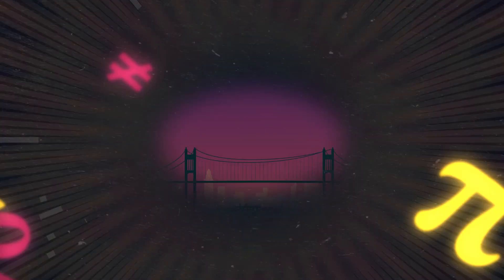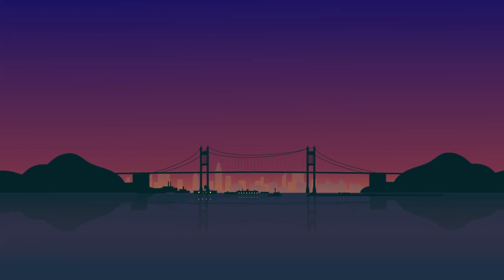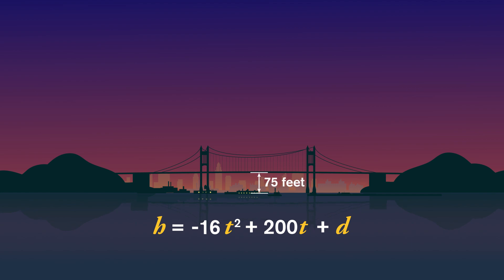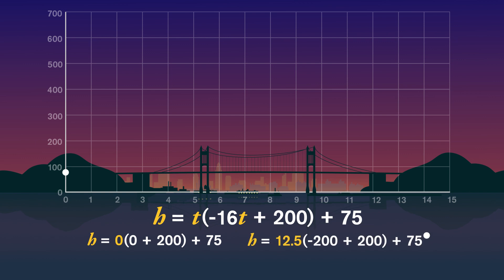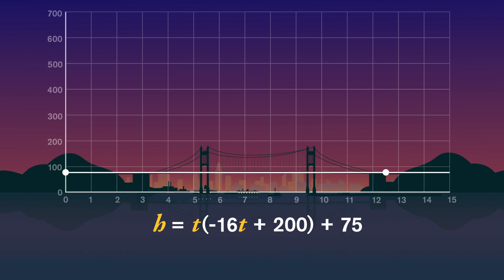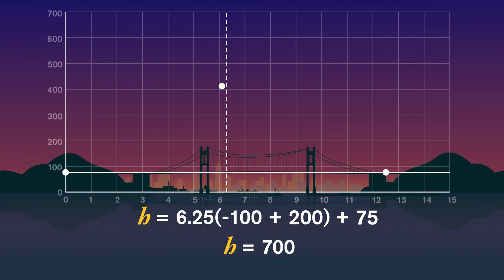Let's say you and your local fire department have been assigned to set off celebratory fireworks from a bridge over a nearby lake. To set your fuse properly, you want to find how long it takes the fireworks to reach their maximum height. The fireworks launch upward at 200 feet per second, so initial velocity v is 200, and the bridge is 75 feet above the water, so initial height d is 75. The a coefficient here is negative 16, so the graph will be upside down and narrower than y equals x squared, and the vertex will be the maximum. We notice that at t equals 0 and t equals 12.5, the height is 75 feet. Since the graph is symmetric, the fireworks reach their maximum height halfway between those two times, at t equals 6.25 seconds. Plugging that in, the fireworks will launch 700 feet into the air.